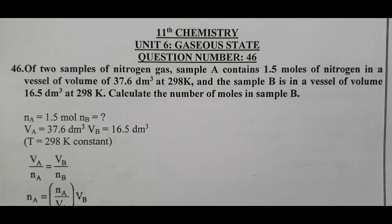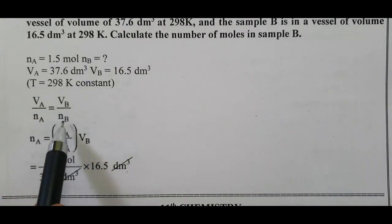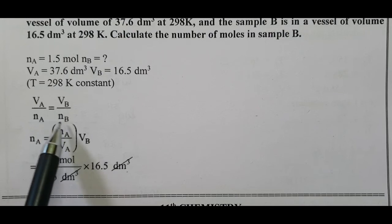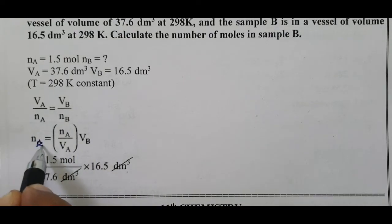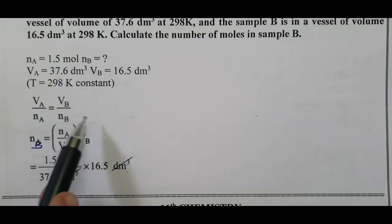According to Avogadro hypothesis, we know VA divided by nA equal to VB divided by nB. We have to calculate number of moles of B. Therefore, number of moles of B is equal to VB into nA divided by VA.